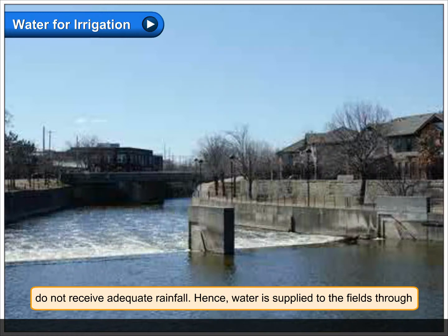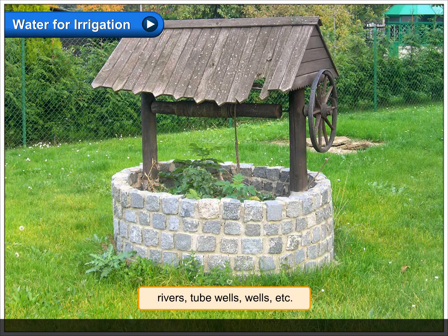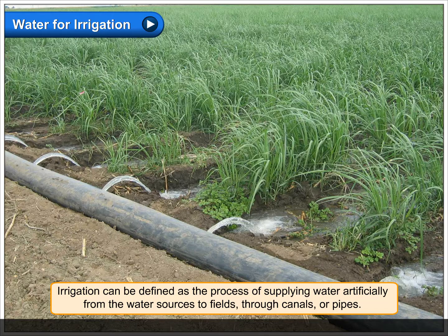Hence, water is supplied to the fields through rivers, tube wells, wells, etc. Irrigation can be defined as the process of supplying water artificially from the water sources to fields through canals or pipes.